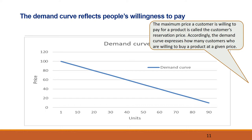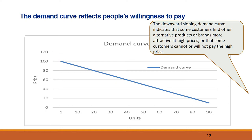Embedded in this assumption is that it's not possible to price discriminate and sell the same product at different prices — we will revert to this in a separate video. The downward sloping demand curve also indicates that some consumers find other alternative products or brands more attractive at higher prices, or that some consumers cannot or will not pay the high price. The demand curve does not express how consumers value the product in isolation, but how they value it considering that other similar products are being sold by competing companies. The demand curve is therefore highly affected by the availability and prices of similar products.